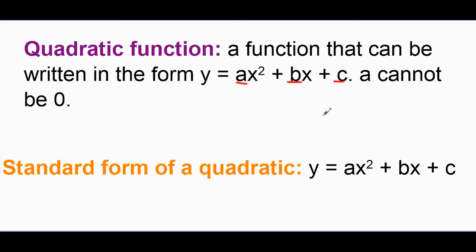We're going to be using A, B, and C throughout the entire unit related to quadratics. Remember, quadratic simply means that the highest exponent is 2 — that is why this is called a quadratic function. Also, A, the number out front, cannot be 0, because if it were 0, the X squared term would be gone and we wouldn't have a quadratic.